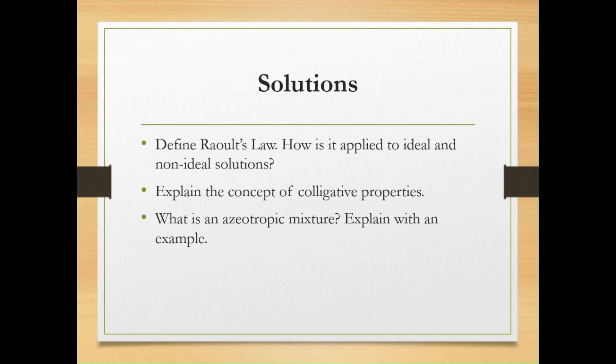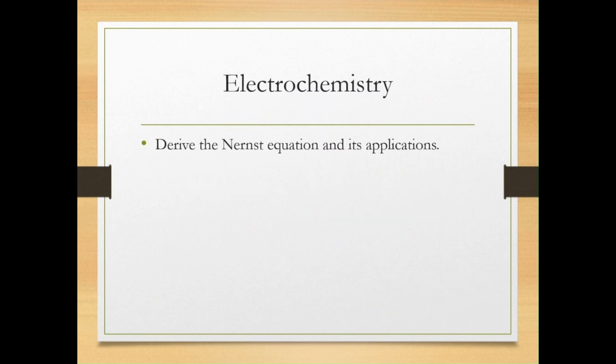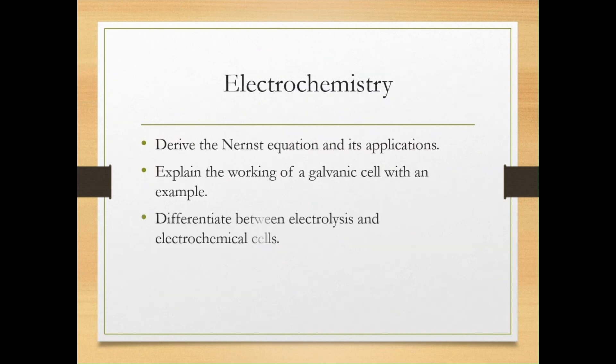Then coming on to the next chapter, Electrochemistry: define the Nernst equation and its application, explain the working of a galvanic cell with an example. All these questions have been discussed between electrolysis and electrochemical cells.